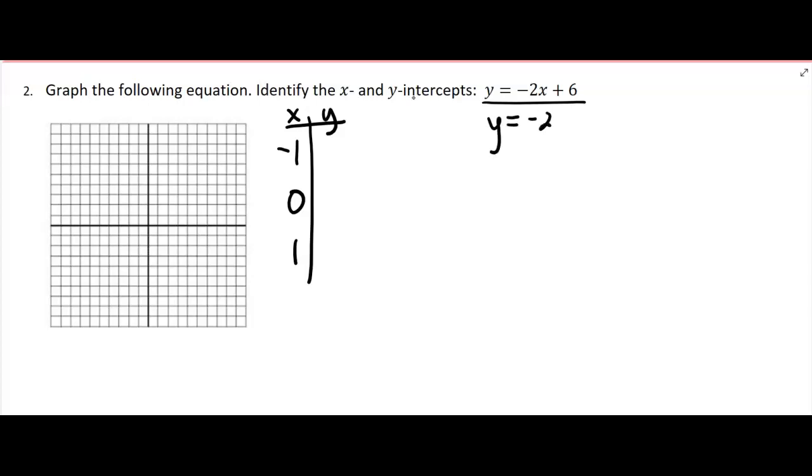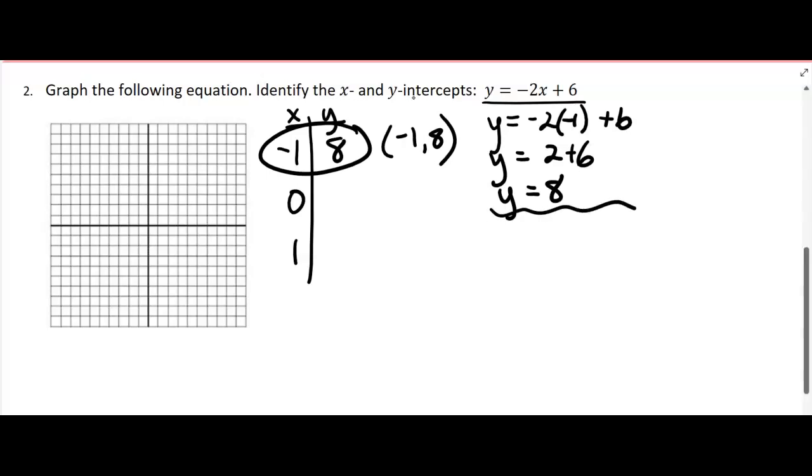So if I put in negative one and then I follow the order of operations, I'm gonna get two plus six, which is eight. So that represents an ordered pair: negative one comma eight. I usually take the time to write it out, but I'll be graphing, so negative one, eight is gonna be right there. Now I'm gonna plug in zero - the squiggly line isn't particularly exciting, it just separates the problems. And I get y equals six. That's another point: zero, six.